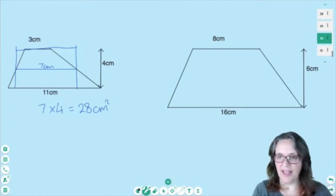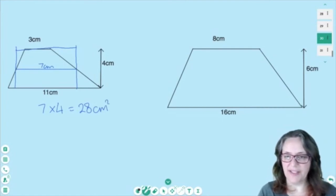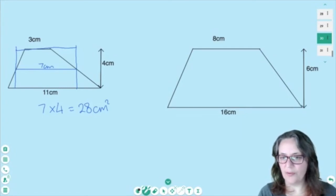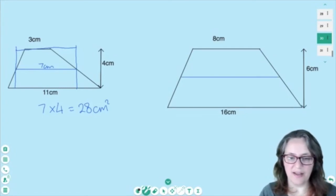And then here I've got 8 cm and 16 cm. My distance across the middle, well halfway between 8 and 16 is going to be 12 cm. So we can do that looking at a ruler. 16 add 8 and halve it.